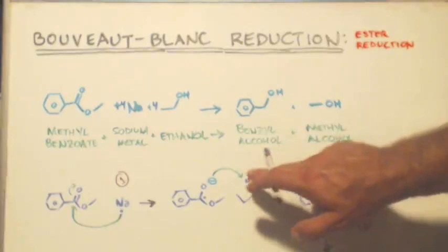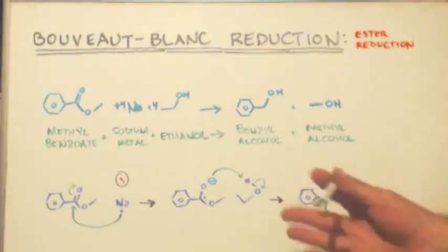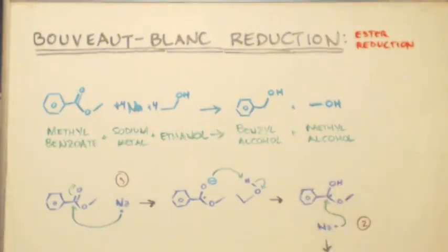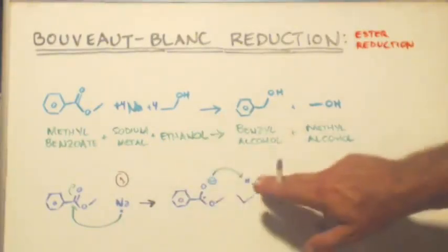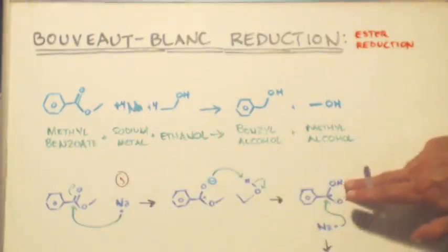Now your ethanol, which can be more than just ethanol, it could be methanol, isopropanol, n-propanol, but it has to be a proton donor. I chose ethanol for this mechanism. So it protonates onto that negative oxygen there, and this is what you end up with.